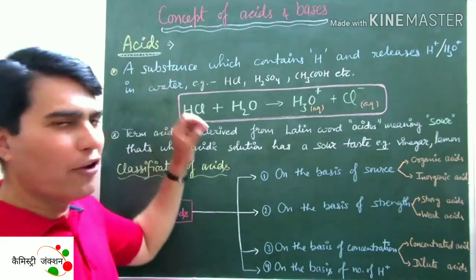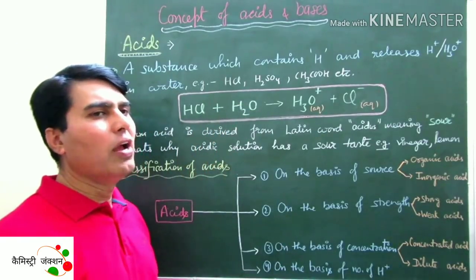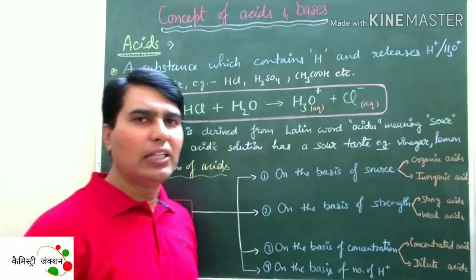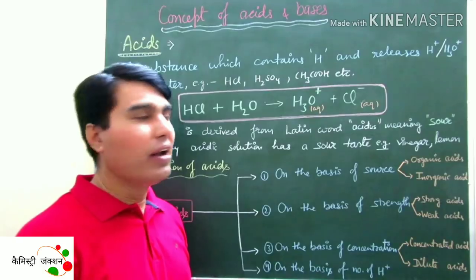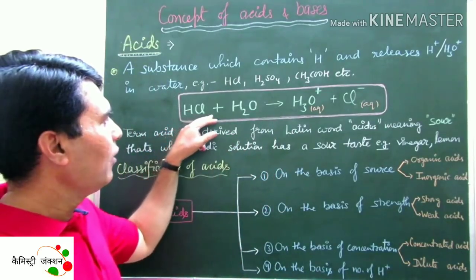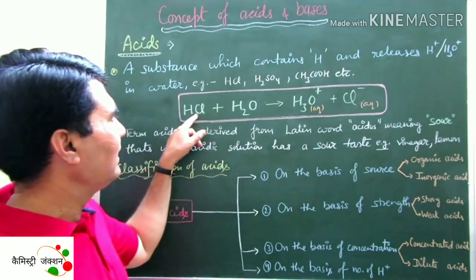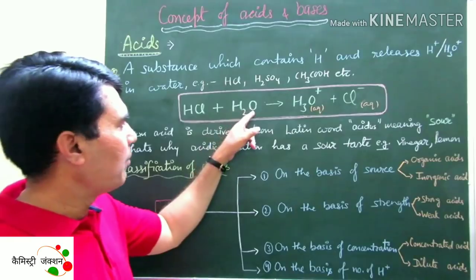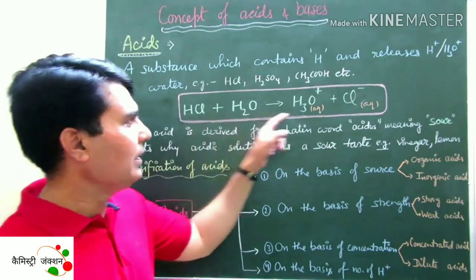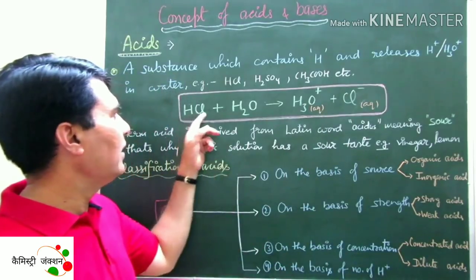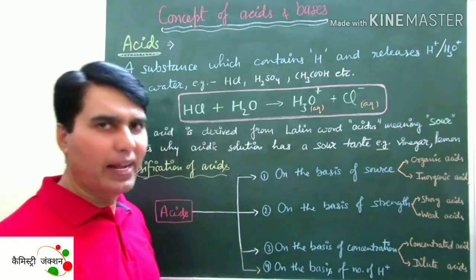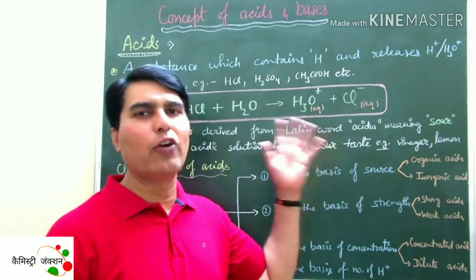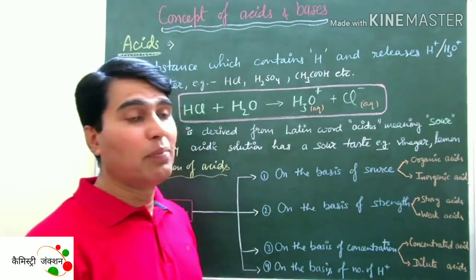Any substance which contains hydrogen and, after dissolving in water, gives H+. Now, why did we write both H+ and hydronium ion? What happens is that H+ does not exist alone in water — it combines with water to form hydronium ion. For example, when HCl is dissolved in water, Cl is electronegative so it gets a negative charge, and HCl gives hydronium ion. So any substance that gives hydronium ion after dissolving in water is called an acid.